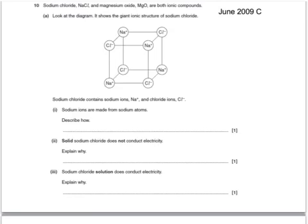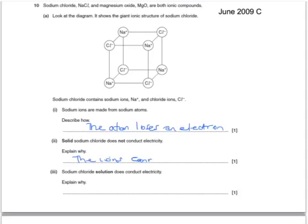Here's another question. Sodium chloride, NaCl, and magnesium oxide, MgO, are both ionic compounds. Look at the diagram — it shows the giant ionic structure of sodium chloride. Sodium chloride contains sodium ions, Na+, and chloride ions, Cl−. Sodium ions are made from sodium atoms — describe how the atom loses an electron. Solid sodium chloride does not conduct electricity — explain why: the ions cannot move, or they are in fixed positions. Sodium chloride solution does conduct electricity — explain why: the ions are free to move.